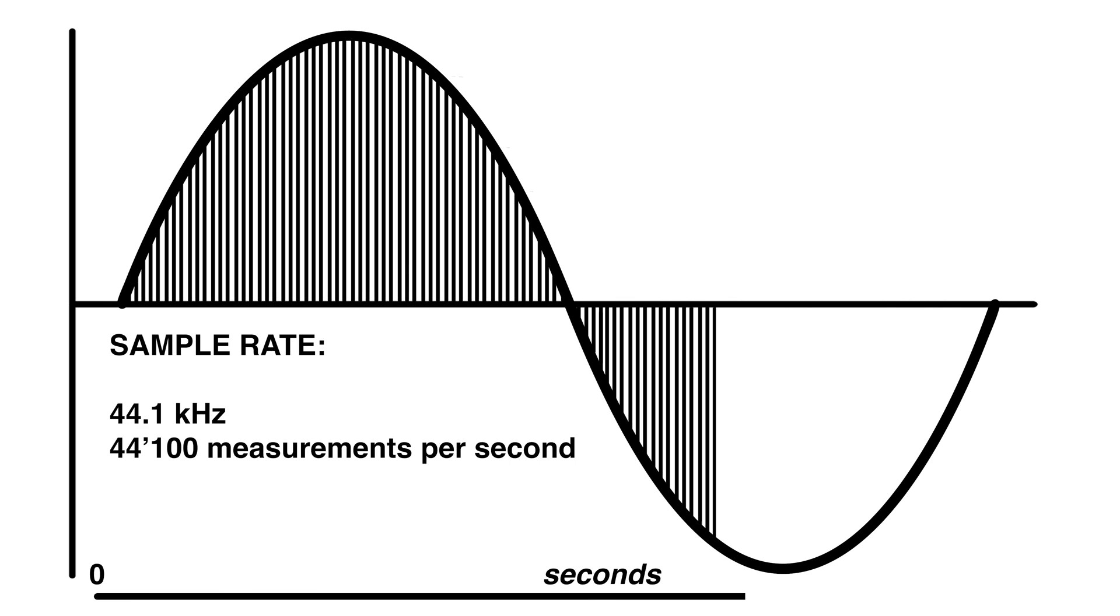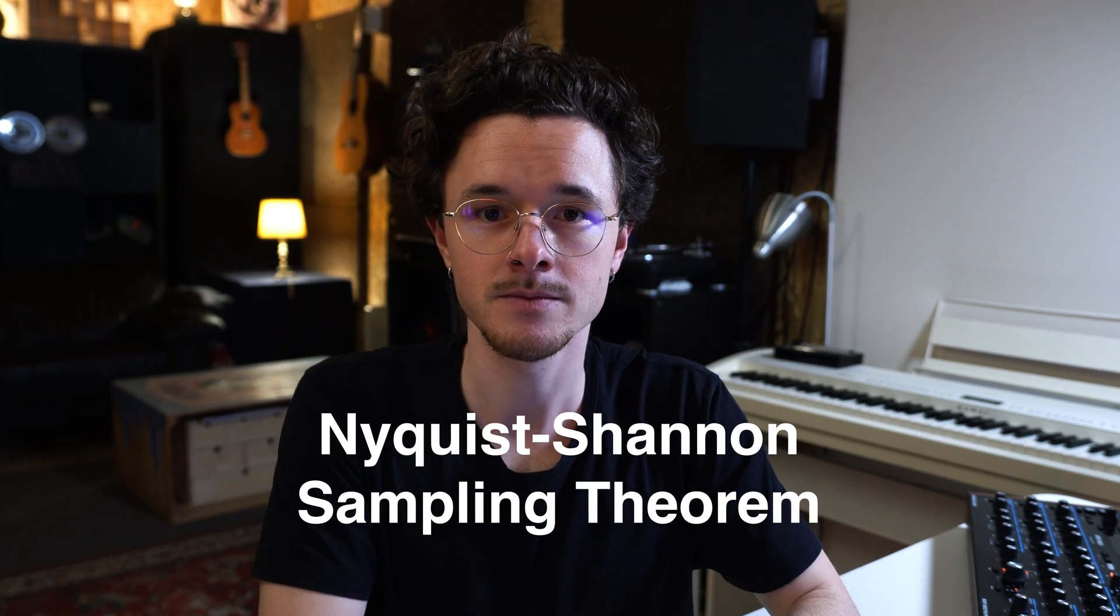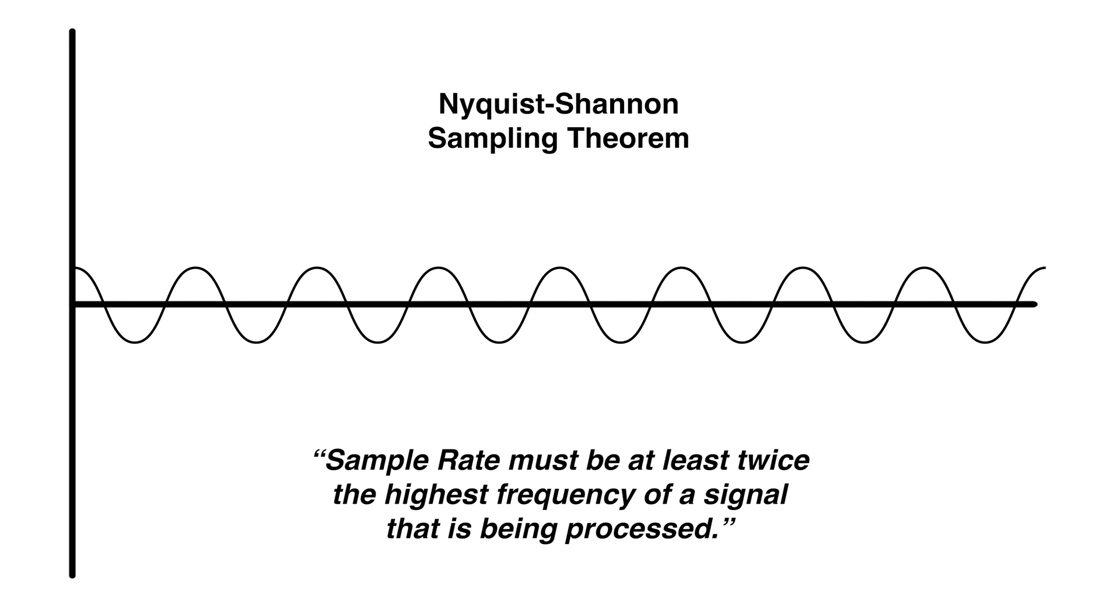There's actually a reason why most audio files that are used for streaming services or for CDs have a sample rate of 44.1 kHz, and the reason can be described with the Nyquist-Shannon sampling theorem. The theorem says that the sample rate must be at least twice the highest frequency of a signal that is being processed. Now we humans can only hear up to 20 kHz, so the sample rate must be at least 40 kHz.